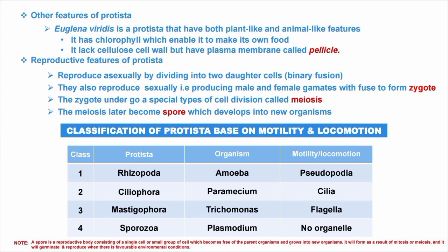Class one is Rhizopoda — example: Amoeba — they move by means of pseudopodia. Class two is Ciliophora — example: Paramecium — they move by means of cilia. Class three is Mastigophora — example: Trypanosoma — they move by means of flagella. Class four is Sporozoa — example: Plasmodium — they have no organelle of movement. I highly recommend you know this table, especially cilia, Paramecium, and flagella.